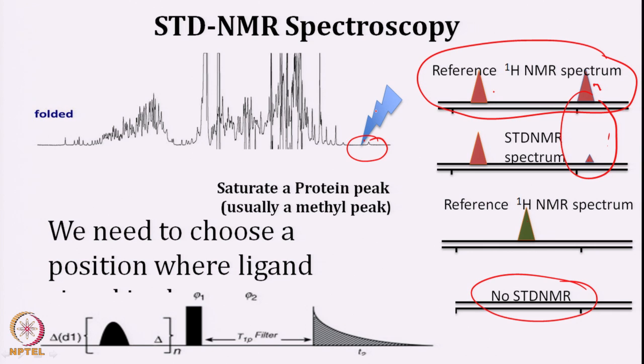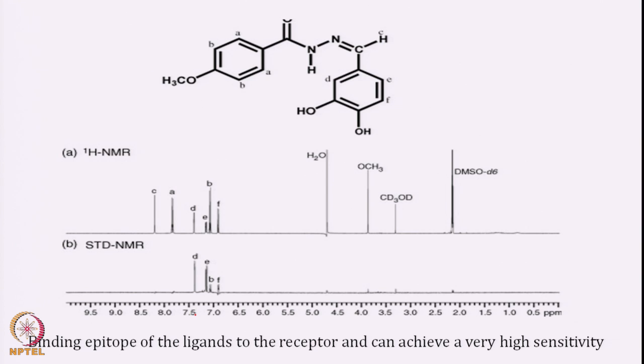The pulse sequence involves two experiments — one saturated, one non-saturated. For saturation, you apply a saturation pulse, then a 90-degree pulse, then record. In one experiment you don't saturate, in another you saturate, take the difference, and the difference peak tells whether it is binding or not. For example, here is a ligand binding to a protein. We record the proton NMR spectrum and get the chemical shift for each proton A, B, C. Then we saturate the protein signal and subtract. Peaks from solvent vanish, and D, E, F peaks appear — meaning this ligand interacts with the protein at those positions. This moiety interacts with the protein, this other moiety does not.